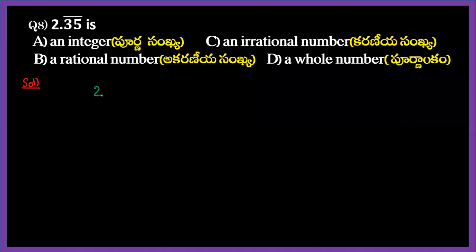So 2.35 bar, let me show you. This is what it means: 2.35 bar. This is a recurring number, a repeating number.